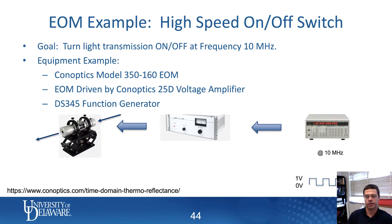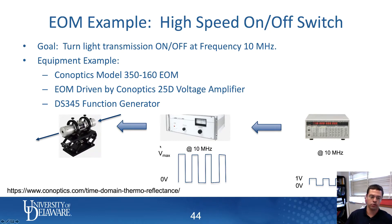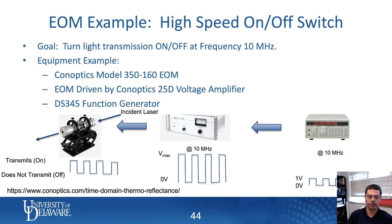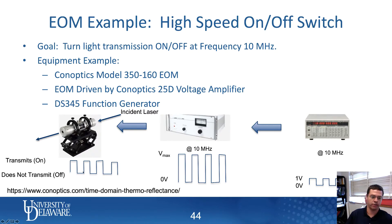The amplifier physically amplifies that square wave. Instead of a 0 to 1 volt signal, you now have a 0 volt to roughly 200 volt signal at 10 megahertz. The EOM takes that 0-to-high voltage and converts it to on/off transmission: when the voltage is high, transmission is at maximum; when the voltage is in the low portion of the cycle, it's off. So at one end you have a function generator at 0 to 1 volt, and at the other end, light either transmits or does not transmit.